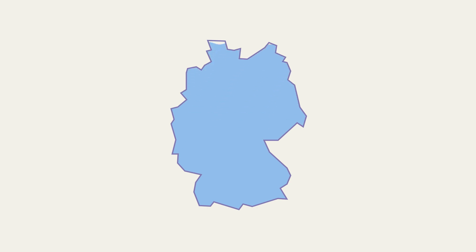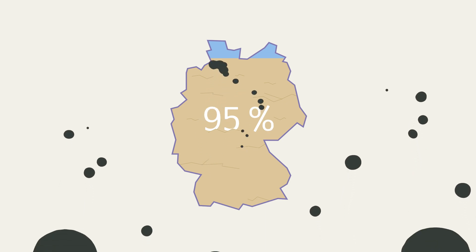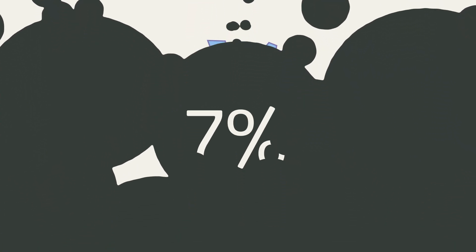The dry figures for Germany: 95% of its peatlands are drained. In this condition, they cause 7% of total national emissions.